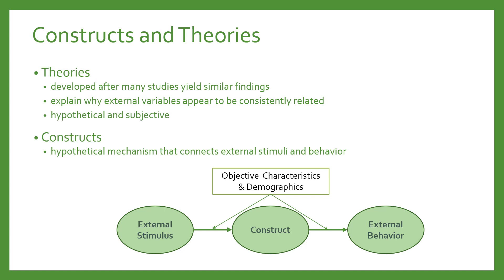Many theories also account for differences in predictive models, with objective participant characteristics and demographics serving as moderators of the effects of stimuli and constructs on external behaviors. Moderators have an influence on the relationship between variables, while mediators are a go-between — X leads to Y leads to Z. Constructs are usually seen as mediators, linking the external stimulus to the external behavior. Objective characteristics and demographics are more like moderators, where the relationship among variables depends on those characteristics.